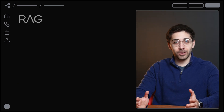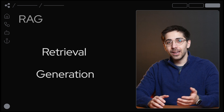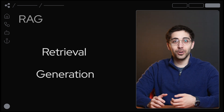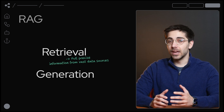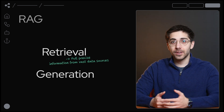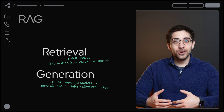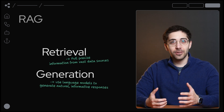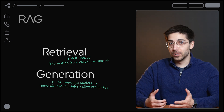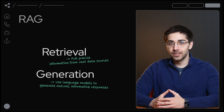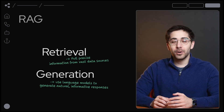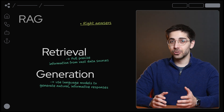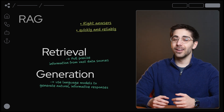RAG combines two powerful concepts: retrieval and generation. It allows your AI agent to pull precise information from vast data sources, like a product catalog or a list of company policies, and then use language models to generate natural and informative responses to user queries. This means an agent that not only gives an answer, but provides the right answers from a trusted source quickly and reliably.